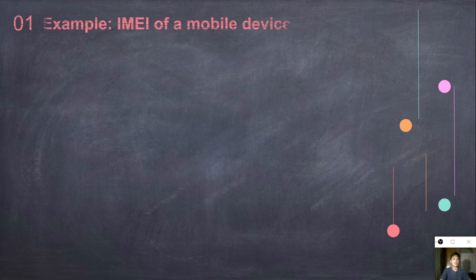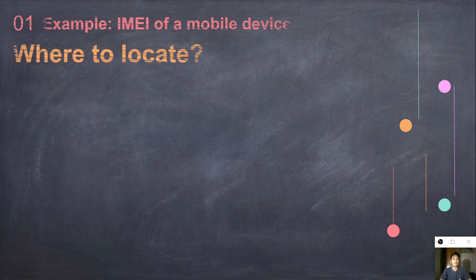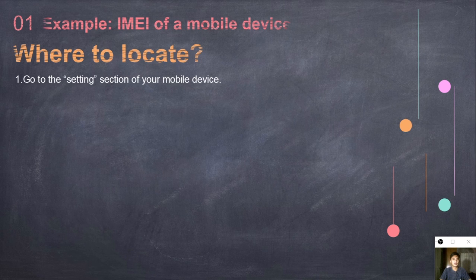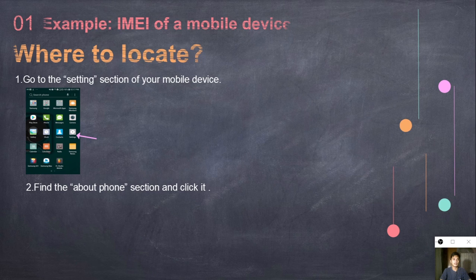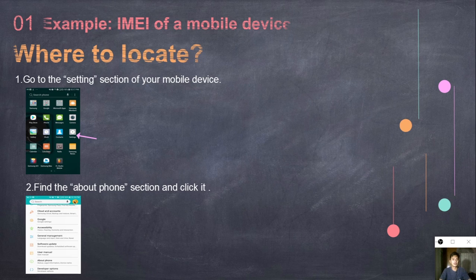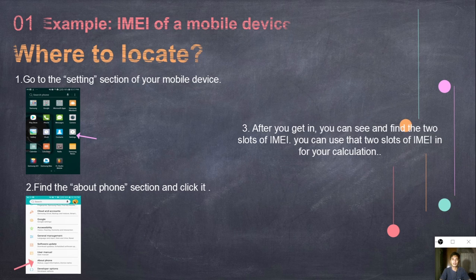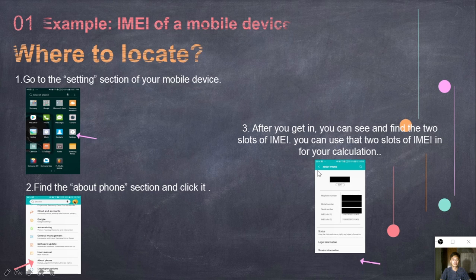For example, the IMEI of a mobile device. So, where can we locate that? First, go to the settings section of your mobile device as you can see on the photo and the arrow shown. Second, find the about phone section and click it. Third, after you get in, you can see and find the two slots of IMEI. You can use the two slots of IMEI for your calculation.